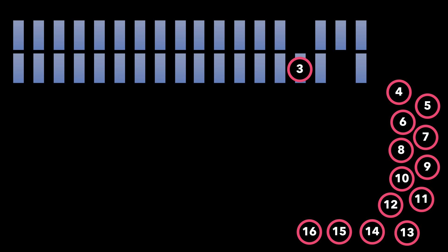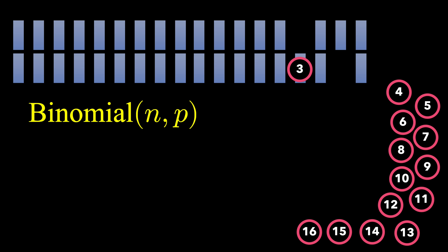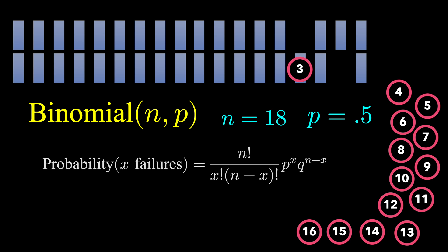Zero failures means all 16 players make it across. One failure means 15 players make it across. Two failures means 14 players make it across. And so on. What we have here is actually a situation that follows the binomial probability distribution, where N is 18 and P is 0.5, 50%. The binomial distribution has a formula that lets us calculate the probability of any number of failures.